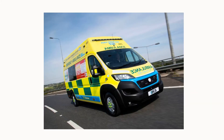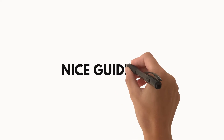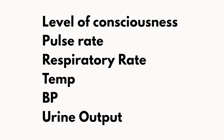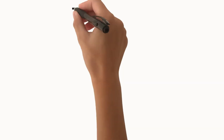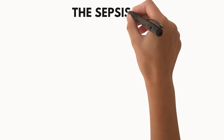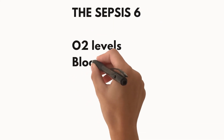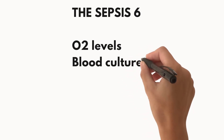If you feel that a patient has sepsis, you should send them straight to hospital. In hospital they will undergo an assessment and be observed in accordance with the NICE recommendations. The hospital will usually assess their level of consciousness, pulse, respiratory rate, temperature, blood pressure, and urine output — the six parameters which have been proven to reduce mortality rates.